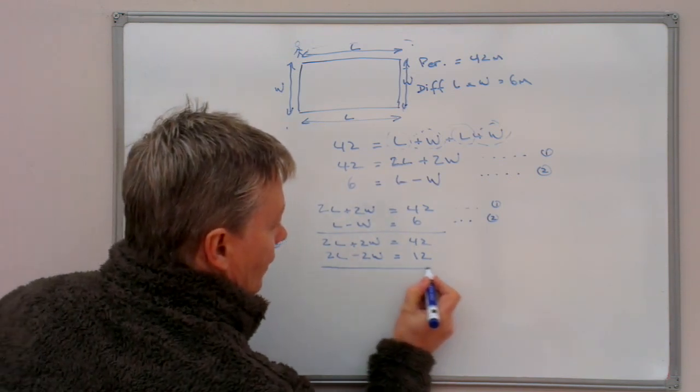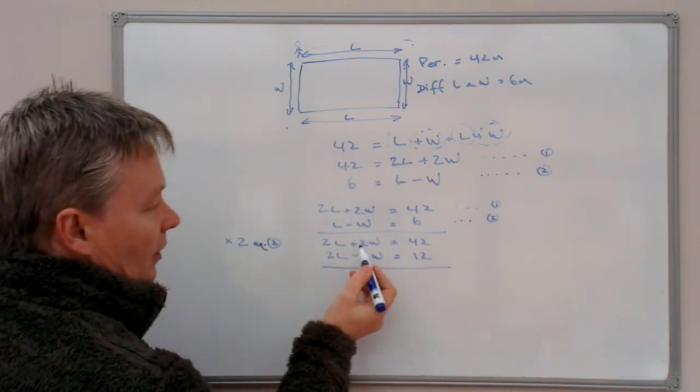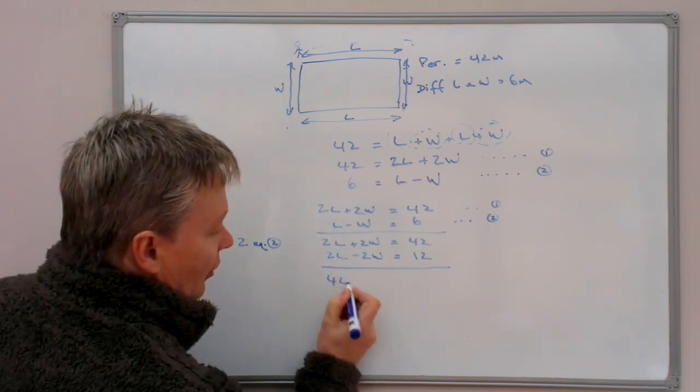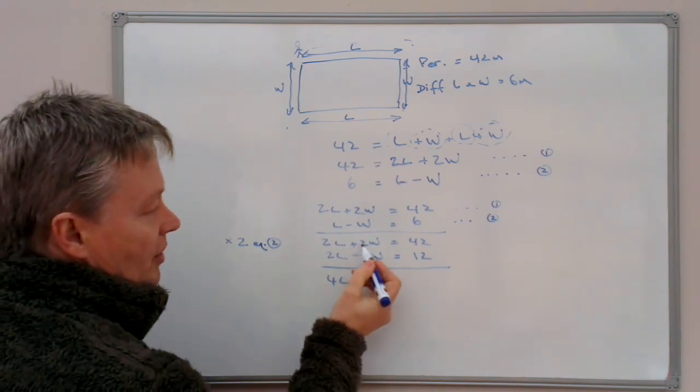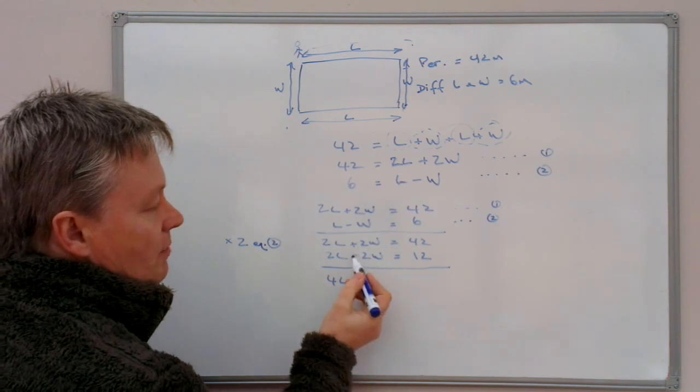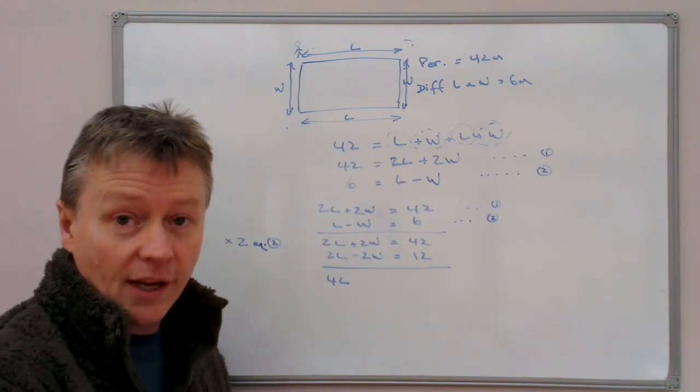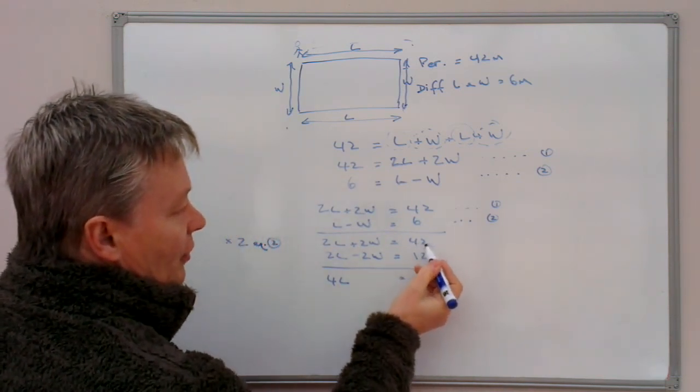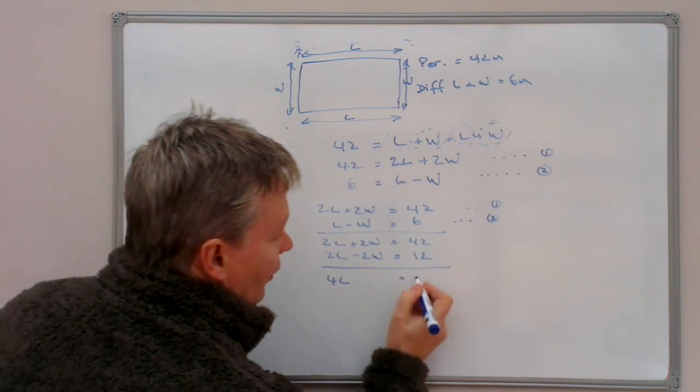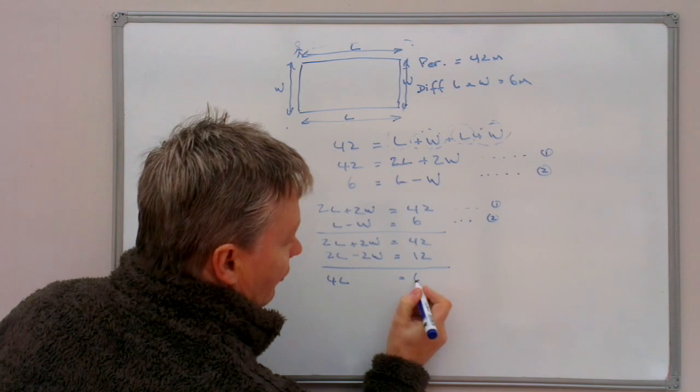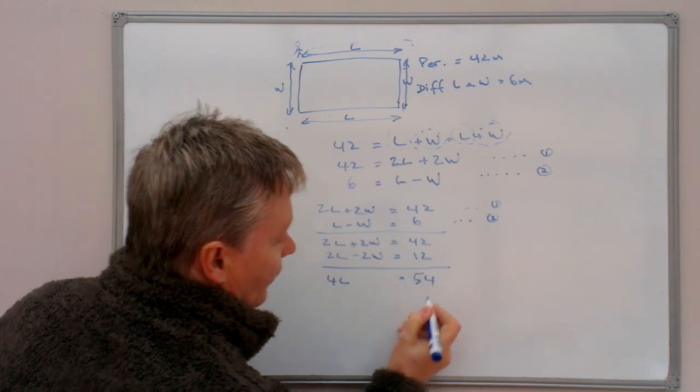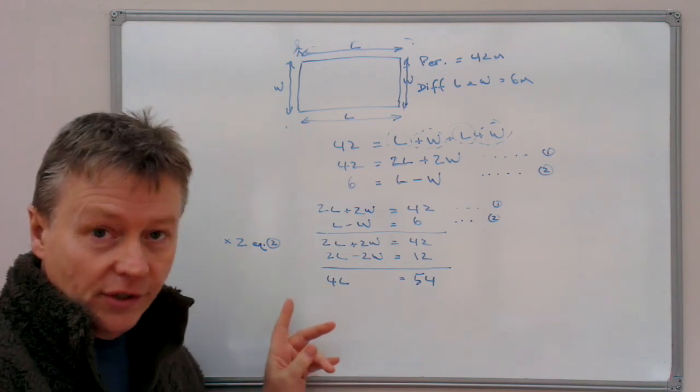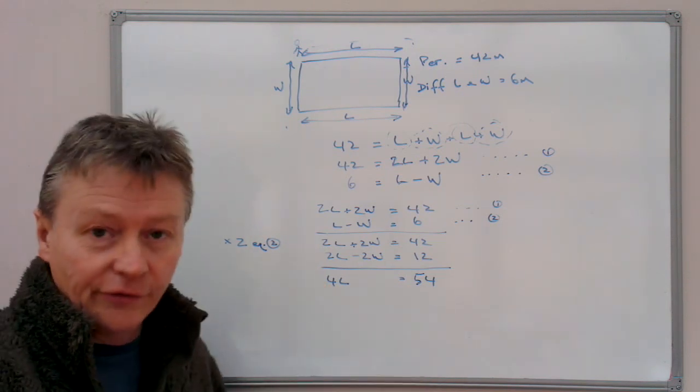So I can now say, well, 2L plus 2L is 4L. Positive 2W plus minus 2W is 0. And that equals 42 plus 12, which is 54. So the value of L, or 4 lots of L, is 54.